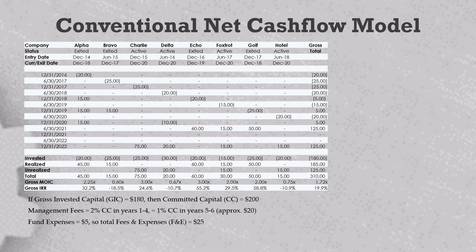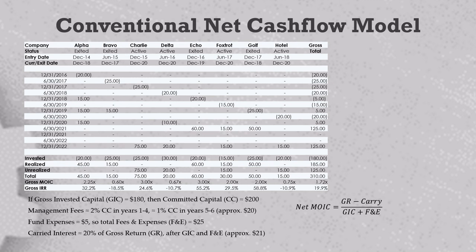To calculate carried interest, we look at profit after fees and expenses. That would be the total gross return of $310 million minus $180 million of invested capital and $25 million in fees and expenses, or $105 million. Carried interest would be 20% of this number or $21 million. From this, we can already calculate a net multiple of invested capital. It is gross return minus the carry divided by gross invested capital plus the fees and expenses. So $289 over $205 gives us a net multiple of 1.410x.